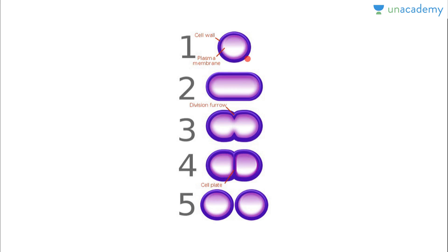Looking at the diagram: this is the organism, with a cell wall and a plasma membrane. First it grows, then there is formation of a division furrow — first there is nuclear division, and after nuclear division there is a division furrow. Then this is the cell plate. Then two daughter cells are produced. So the organism divides into two daughter cells — this is called binary fission.